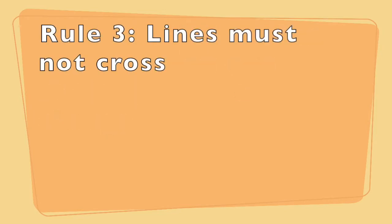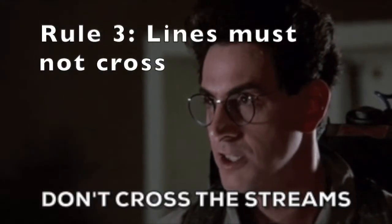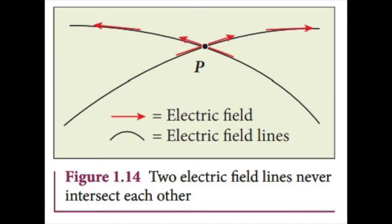The third rule is that the lines must not cross. The reason for this is if you have two lines crossed, then the direction of the field isn't defined anymore. Somehow you have a field going in multiple directions at once, which doesn't make any sense.